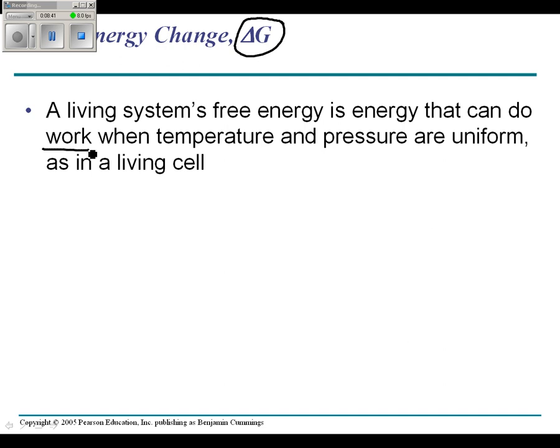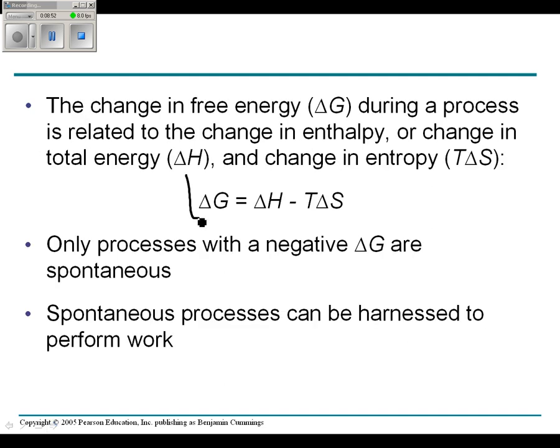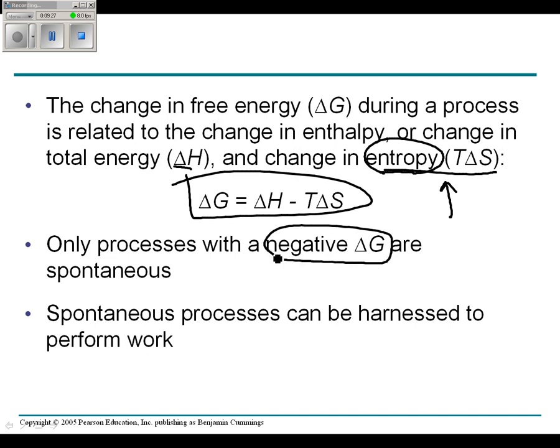A system's free energy is energy that can do work. It's available for work when temperature and pressure are uniform. If you're in a cell, temperature and pressure are uniform. This equation is on your formula sheet. The change in free energy, delta G, during a process is related to the change in enthalpy or change in total energy, delta H, and change in entropy, the disorderedness of the universe, T delta S. T is temperature. So if T gets higher, entropy is higher. That makes sense because T is disordered random movement of molecules.